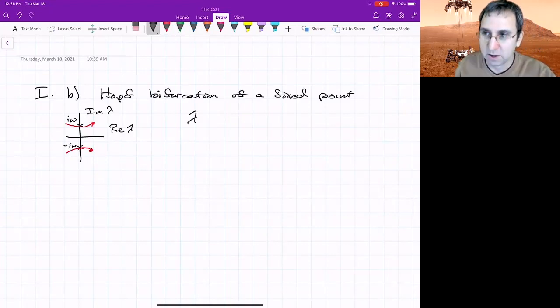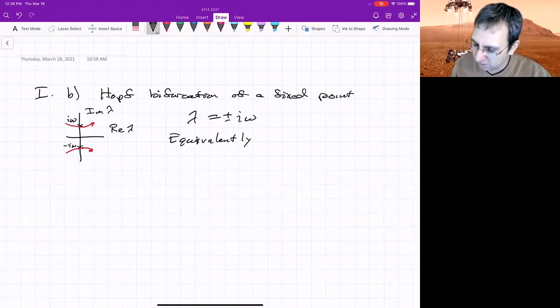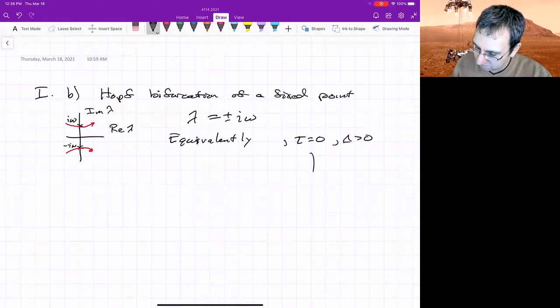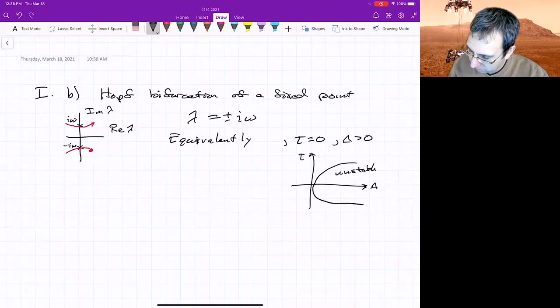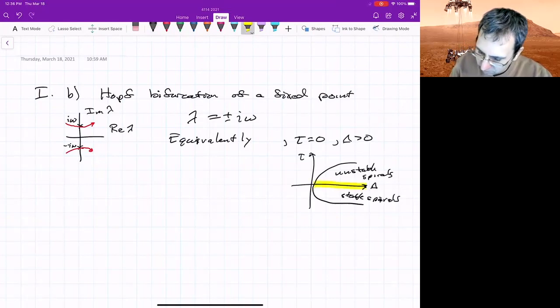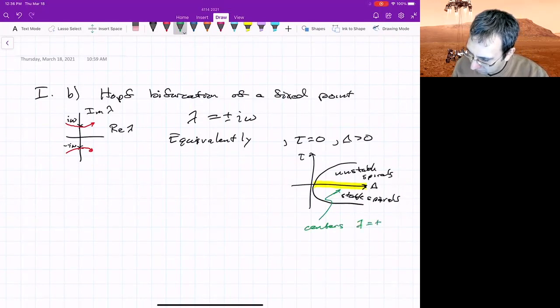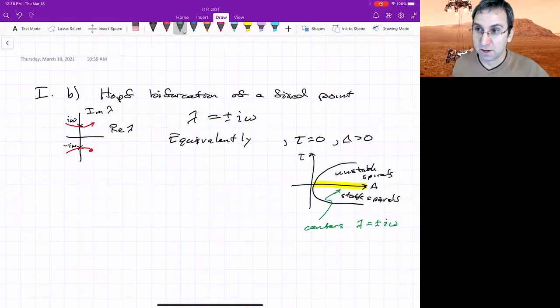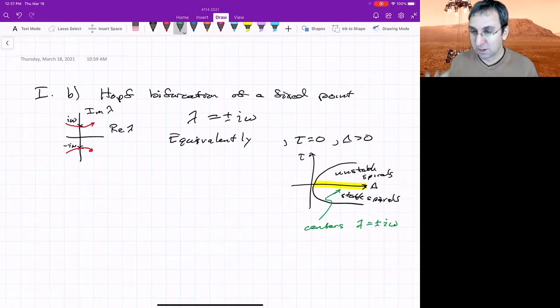So the eigenvalues are purely imaginary. In terms of the diagram that we've written before, this would be equivalent to tau equals zero and delta is greater than zero. So you remember that diagram, delta tau. These were the unstable spirals, these are stable spirals. And right along that line would be centers, and they have eigenvalues of plus or minus i omega, just purely imaginary. So as you cross that line, either going from stable to an unstable or vice versa, you could get a Hopf bifurcation.